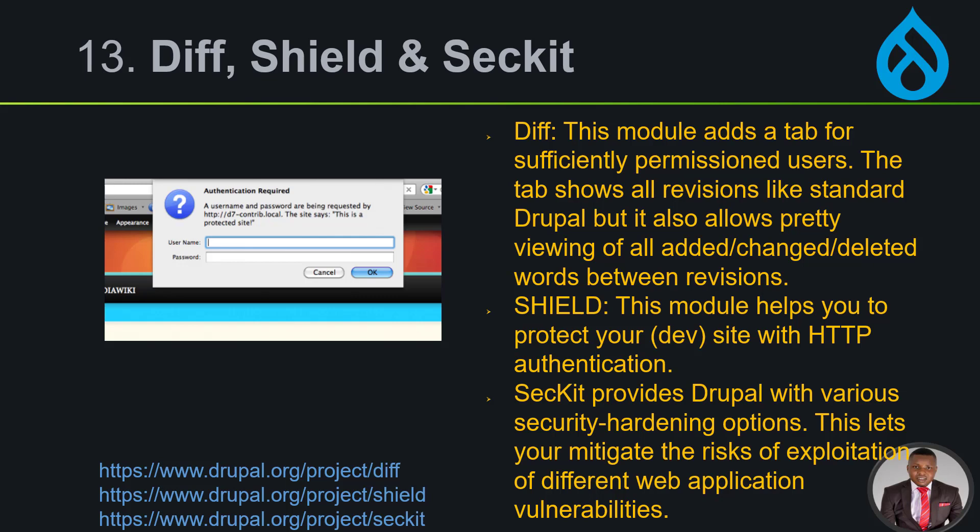Number 13 is Diff and also Shield. Diff is a module that adds a tab for user permissions and shows all revisions in standard Drupal. It covers deleted, changed, and added content — you can see your history and the difference of what you've done. Shield helps you protect your dev sites with HTTP authentication, limiting access to users. These are very important modules.